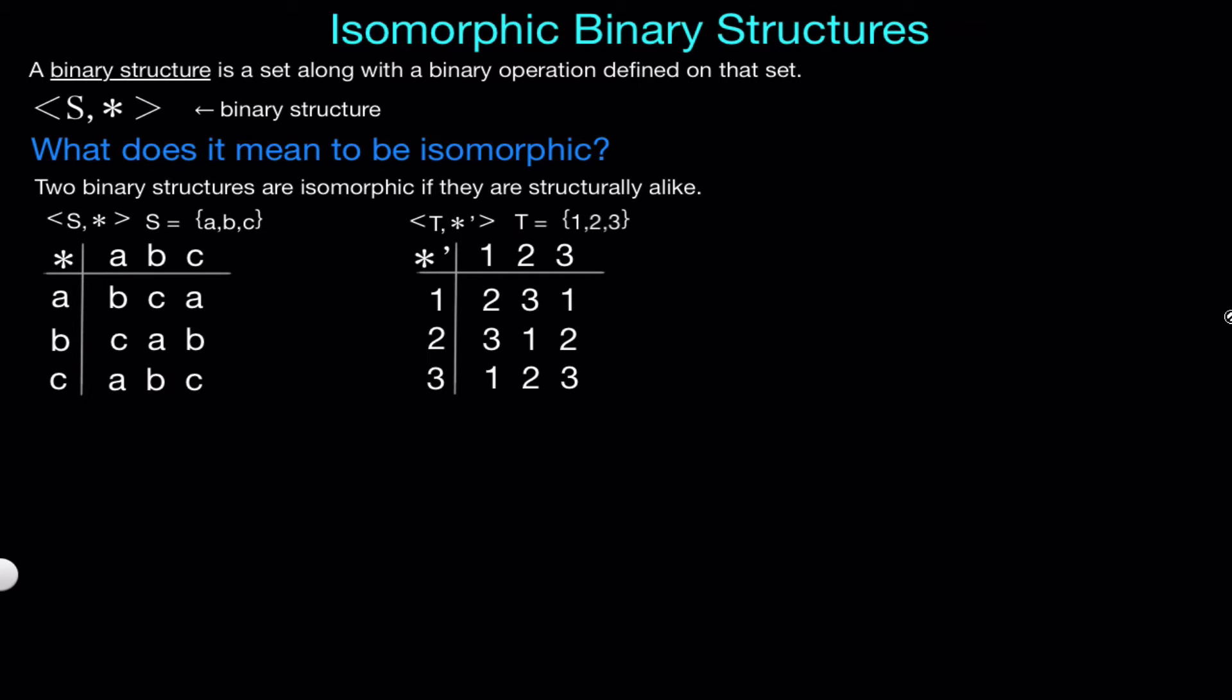Let's look at an example. In this example, we have two structures S and T, where S has the set containing elements A, B, and C with the binary operation star, while T has the set containing elements 1, 2, and 3 with the binary operation star prime. We want to know if these two are isomorphic. In order for these to be isomorphic, we would need to show that the structure S is really the structure T, just in disguise. So we would need to be able to find a map to transform the structure S into the structure T.